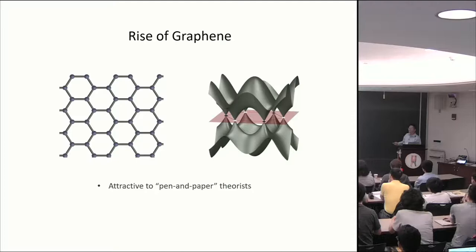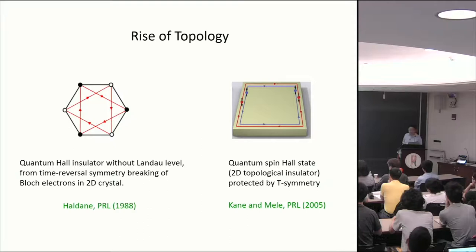Just using the simplest tight binding model on the honeycomb lattice, one can solve the band structure. This serves as an extremely good starting point for understanding the numerous properties of graphene.